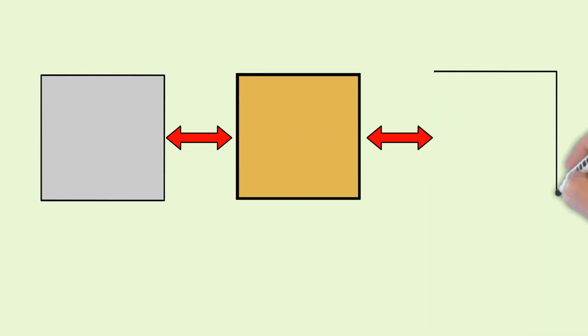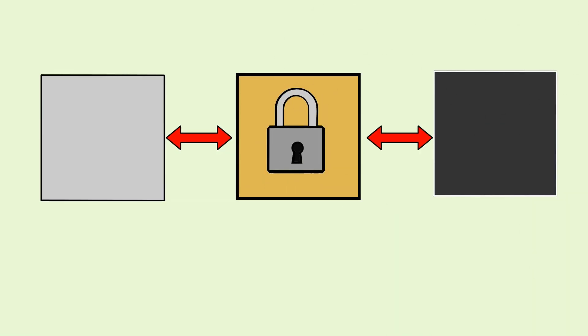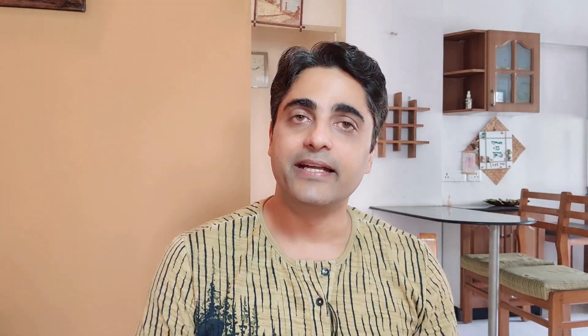Because if you tamper with one block, you have to recalculate the proof of work of all the subsequent blocks. Now, besides hashing and proof of work, a blockchain uses one more mechanism to secure itself, and it is called decentralization.